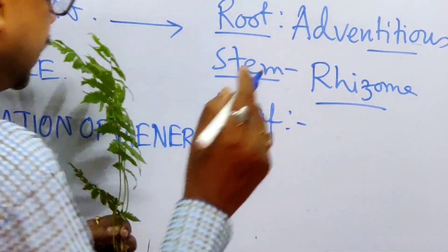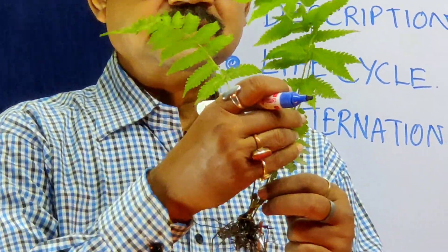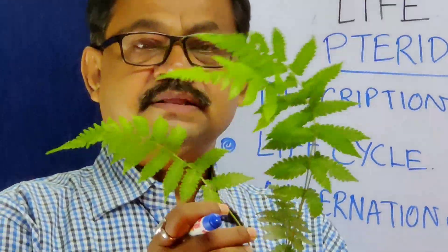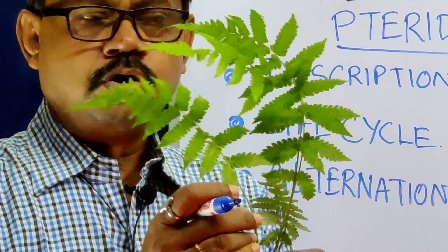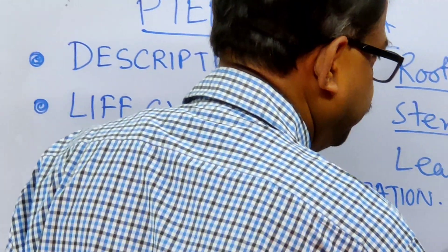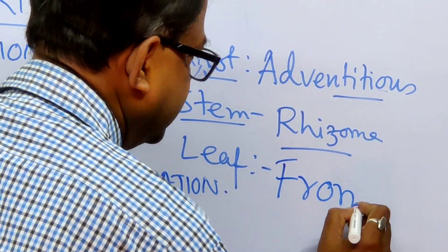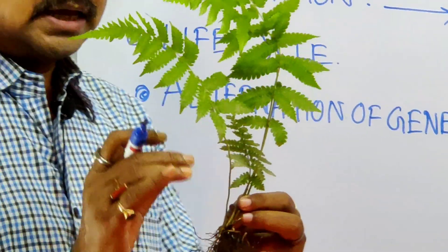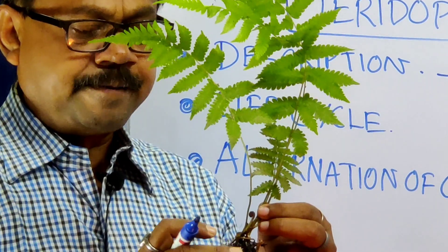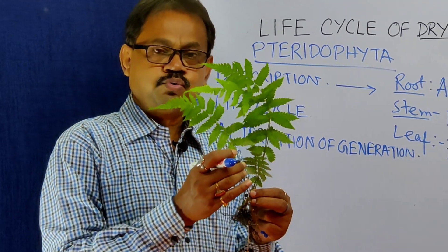And the leaf — this is the total leaf of Dryopteris. The leaf of fern is called a frond, spelled F-R-O-N-D. So in this Dryopteris, it is having a root system, true stem, and true leaf.